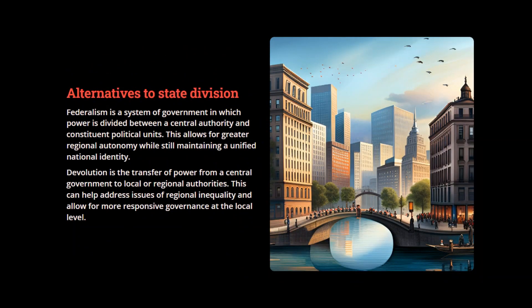Alternatives to state division. Federalism is a system of government in which power is divided between a central authority and constituent political units. This allows for greater regional autonomy while still maintaining a unified national identity. Devolution is the transfer of power from a central government to local or regional authorities. This can help address issues of regional inequality and allow for more responsive governance at the local level.